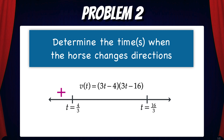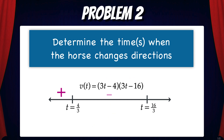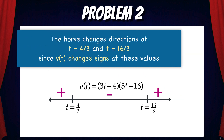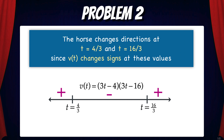Now let's test a number between t = 4/3 and t = 16/3 — here we'll test 3. Plugging in 3, the first factor is positive and the second factor is negative, so v(t) is negative on the interval (4/3, 16/3). Finally, testing a number bigger than 16/3 — let's test 10 — both factors are positive, so v(t) is positive to the right of 16/3. Therefore, the horse changes directions at t = 4/3 and t = 16/3, since v(t) changes signs at these values.